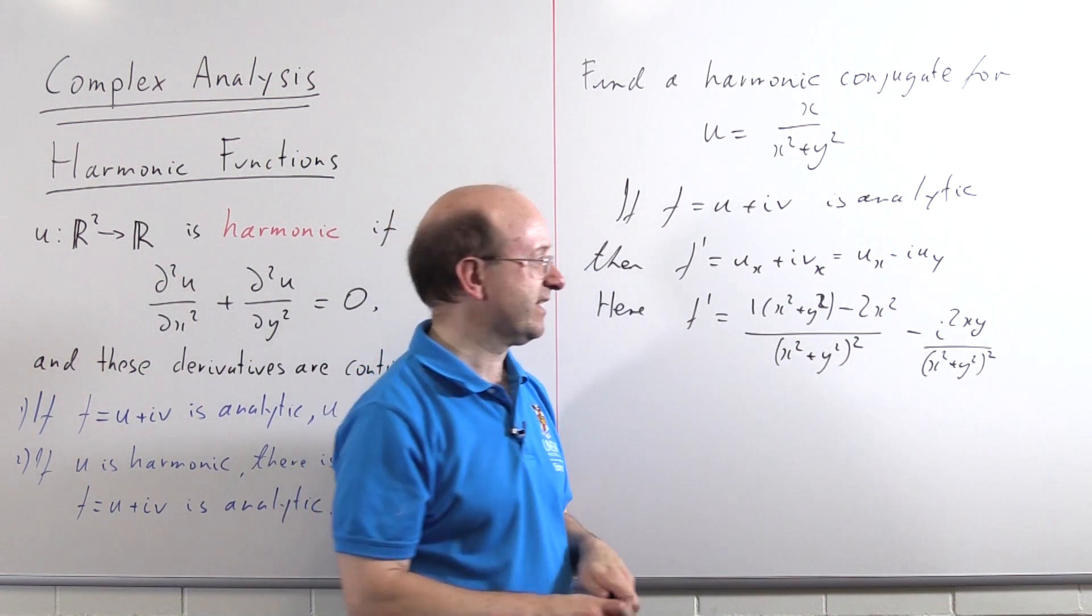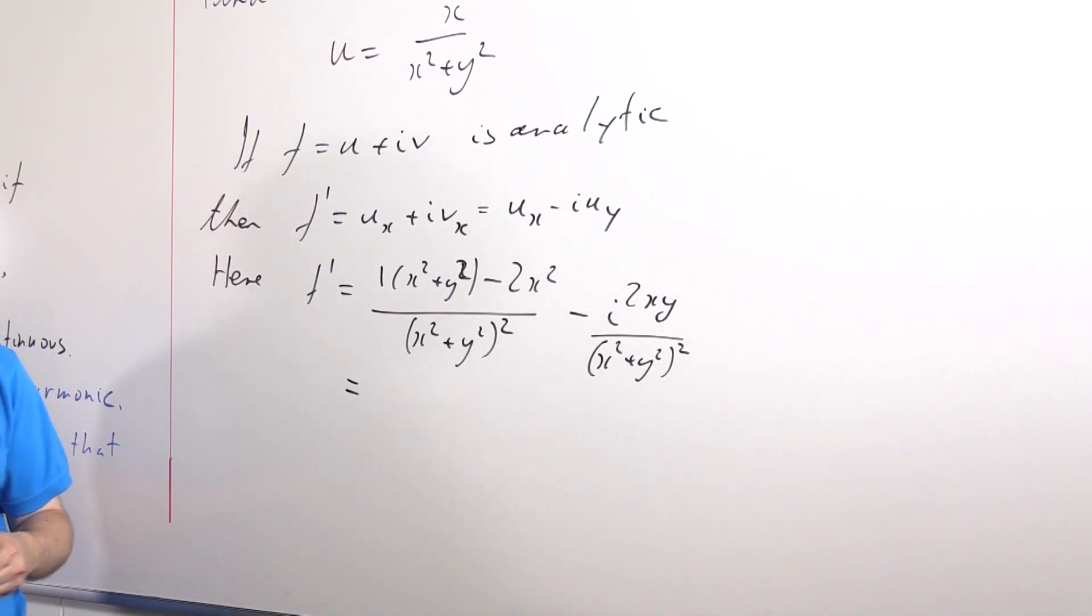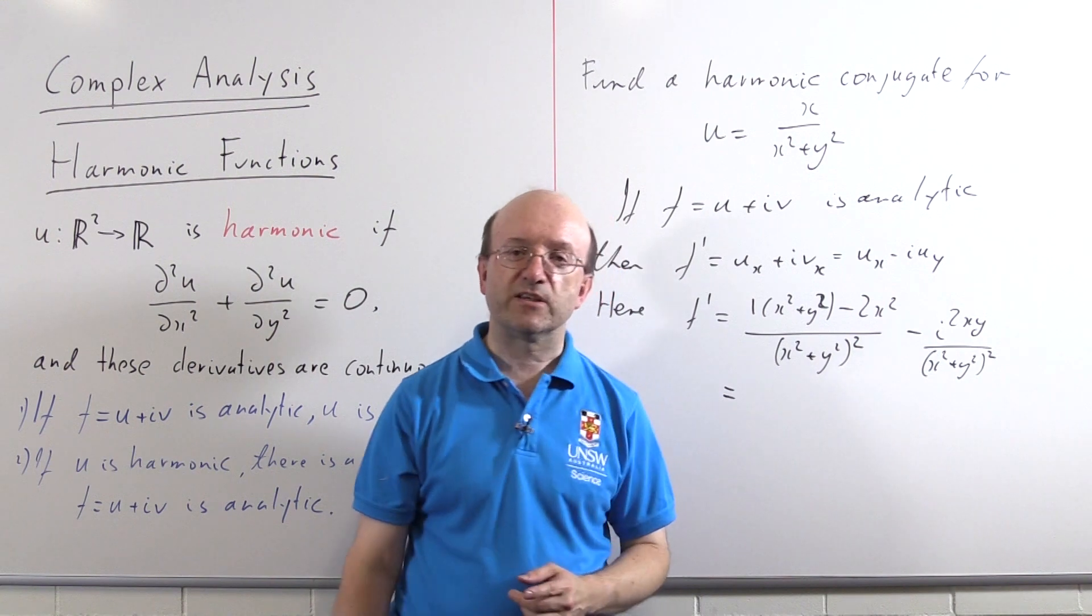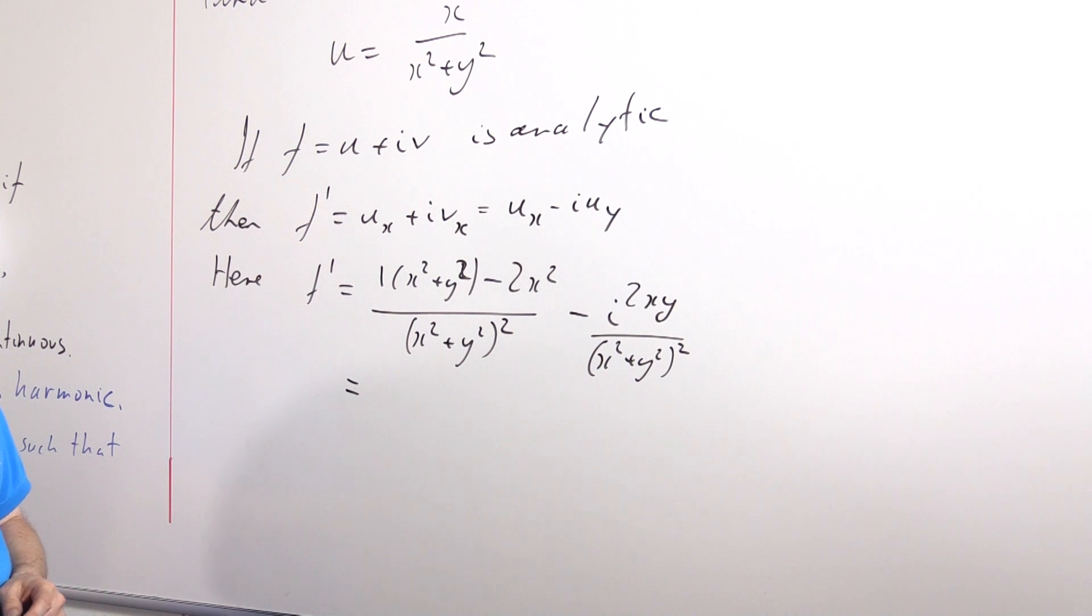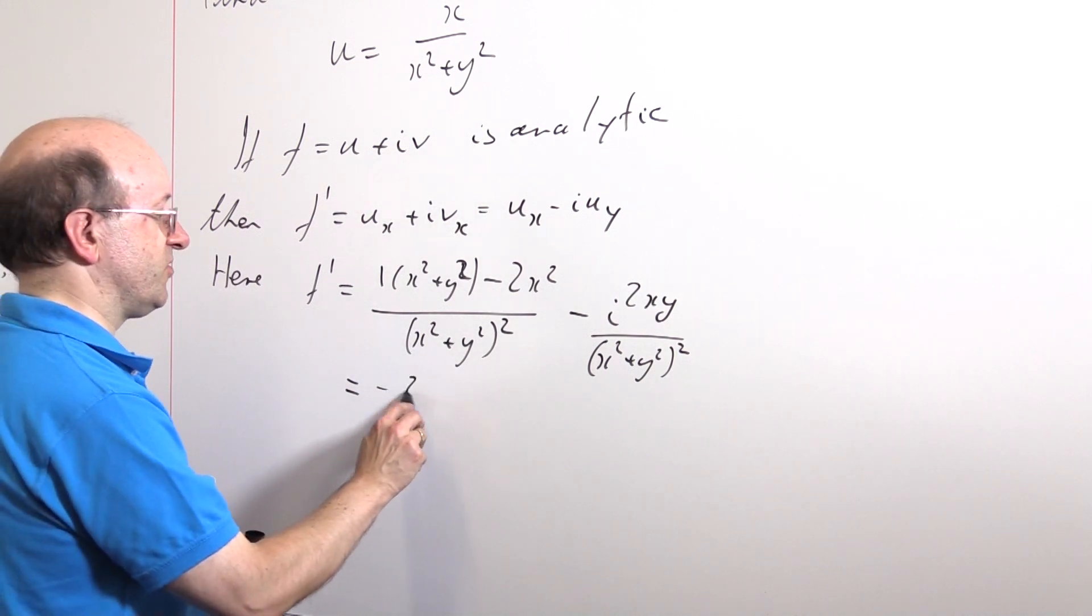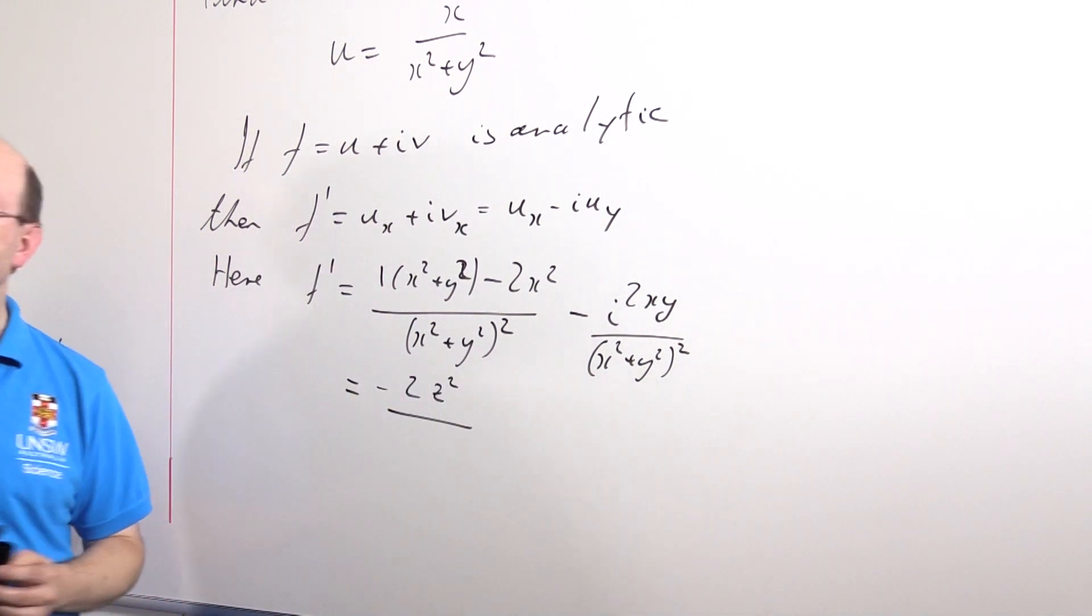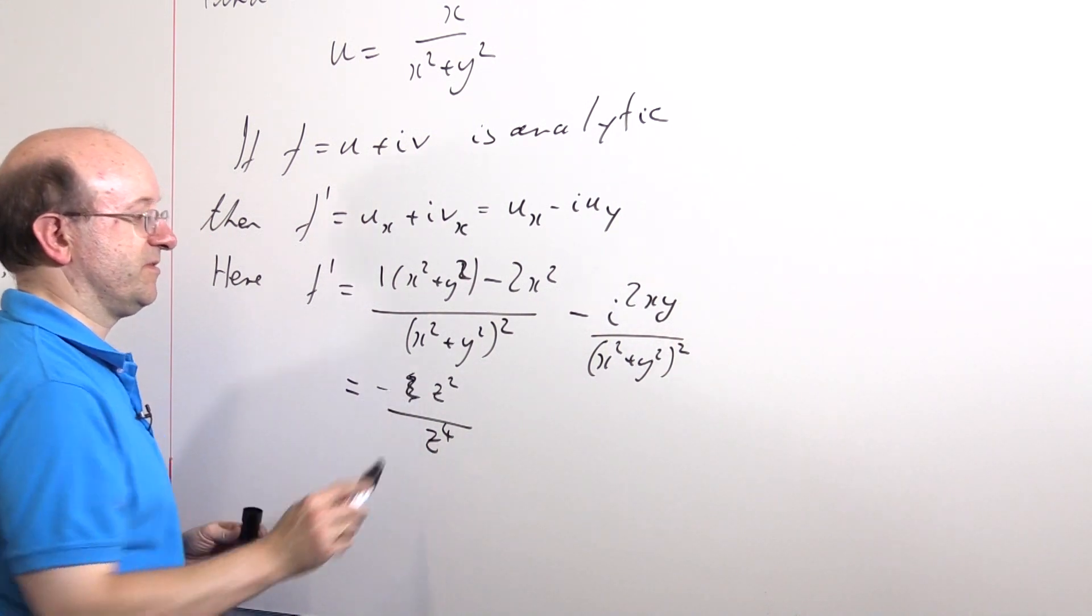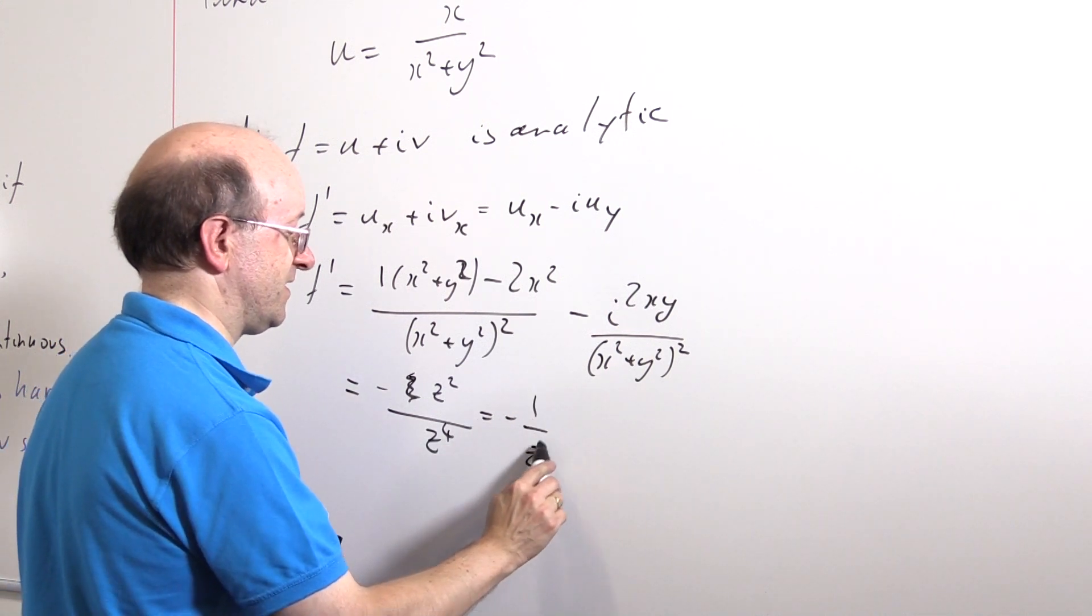What does our analytic continuation trick tell us? Well, it tells us that this as a function purely of z, we just need to set y to be 0 and change the letter x to z. Well, the 2xy term just disappears. What do we get over here? We get x² - 2x² = -x², which would become -z². And on the denominator here, we get z⁴. In fact, we just get z². So this is -1/z².